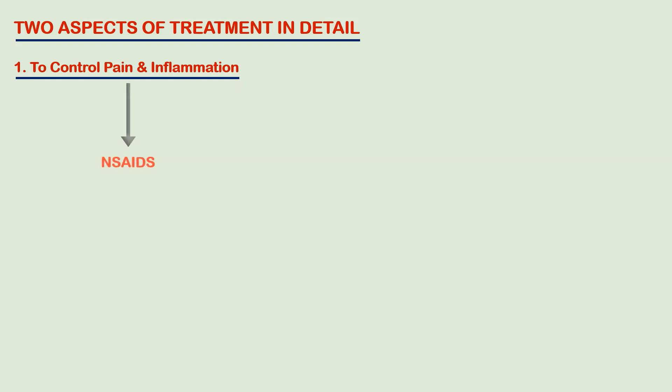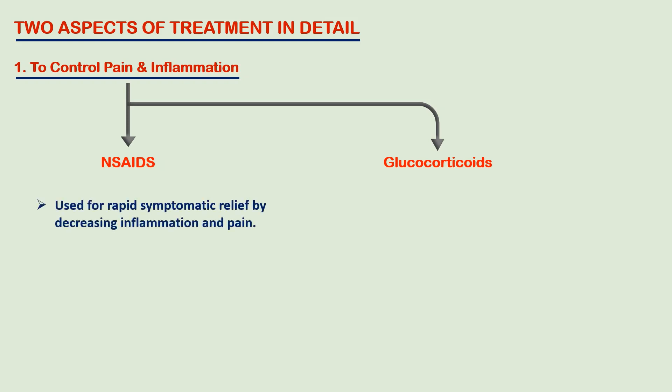Let's look at the drugs used to control pain and inflammation. We mainly use NSAIDs and glucocorticoids. NSAIDs are used for rapid symptomatic relief by decreasing inflammation and pain, and they decrease stiffness and swelling in the joints.